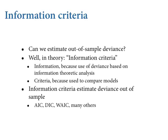Information criteria let us estimate out-of-sample deviance — that's the goal of every legitimate information criterion. There are things people call information criteria, like the Bayesian information criterion, but it's not really an information criterion and it's probably not Bayesian either, because it uses only MAP estimates and doesn't use the whole posterior distribution. It also doesn't have its target as the out-of-sample deviance. We call these things information criteria because they're based on information theory — that's what nominates deviance as the target. The most common ones in Bayesian work are AIC, DIC, and WAIC.